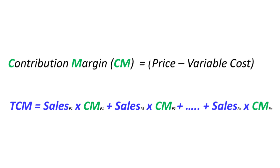Price minus variable cost — that leftover amount per ton is the contribution margin, CM. And the total contribution margin, TCM, is just adding all that up across everything you sell: volume times CM for each product. That total pool of cash is what covers all the fixed costs — salaries, rent, the factory itself — and hopefully leaves something over for profit. So we're chasing that big TCM number.